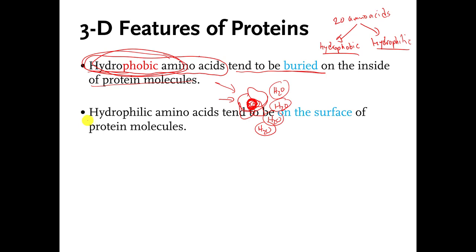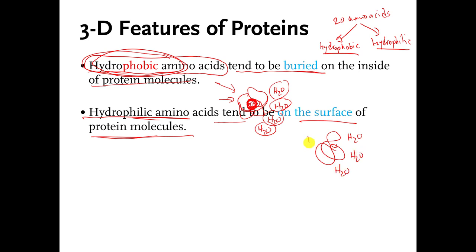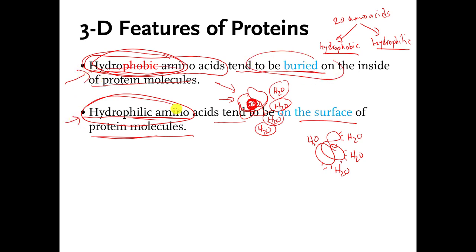And the hydrophilic amino acids tend to be on the surface of a protein molecule. So here's my properly folded-up protein molecule, and it's mostly surrounded by water molecules. This protein molecule also has hydrophilic amino acids, and the hydrophilic ones are usually on the surface because they're pretty happy interacting with the water molecules. So this is a general rule: hydrophobic amino acids are usually on the inside of a protein molecule, and hydrophilic amino acids are usually on the surface. There are many exceptions to this, but this is generally true.